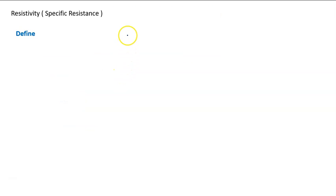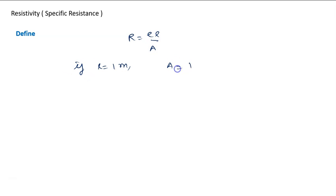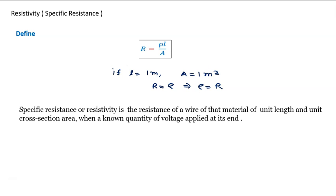Definition of resistivity: according to the formula R = ρL/A, if L equals 1 meter and area equals 1 meter squared, then R equals ρ, or ρ equals R. So specific resistance or resistivity is the resistance of a wire of that material of unit length and unit cross-section area.